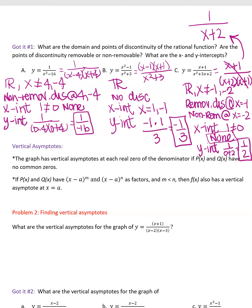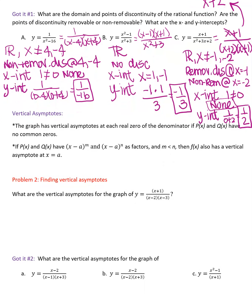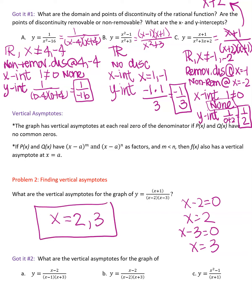Moving on to vertical asymptotes — those are the dotted vertical lines through the x-axis. The graph has vertical asymptotes at each real zero of the denominator if p(x) and q(x) have no common zeros. For example, with nothing canceling, set each denominator factor to 0: x − 2 = 0 gives x = 2, and x − 3 = 0 gives x = 3. So there are two vertical asymptotes at x = 2 and x = 3.